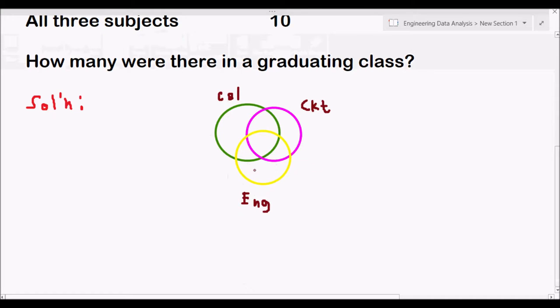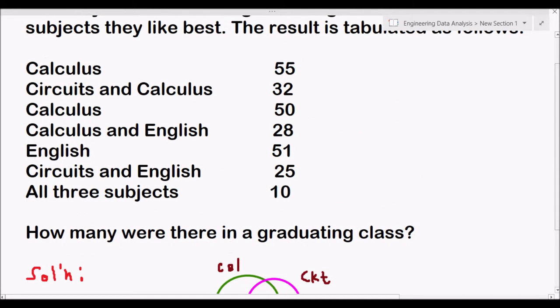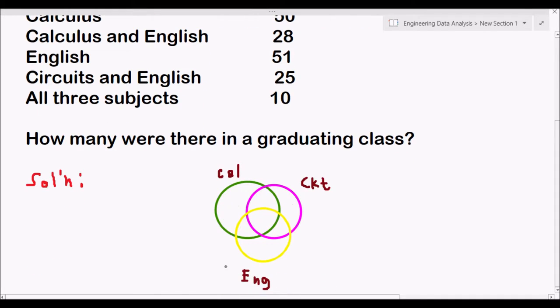The first thing to do is to put the values in every area or in every region just like what we have in our last discussion. Every region must have its own value from the given. The very first thing to do is to get the region in the center. The region in the center means that there are students here who like both Calculus, Circuit, and English. The region in the center, those students like all of the three subjects. How many students like all of the three subjects? From the given we have 10.